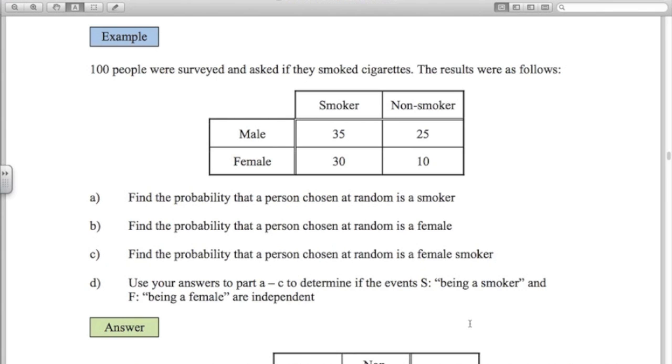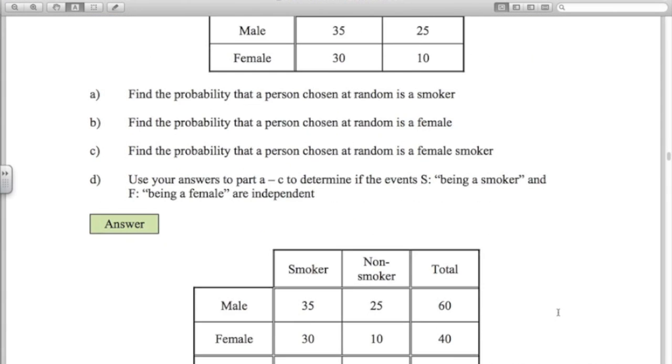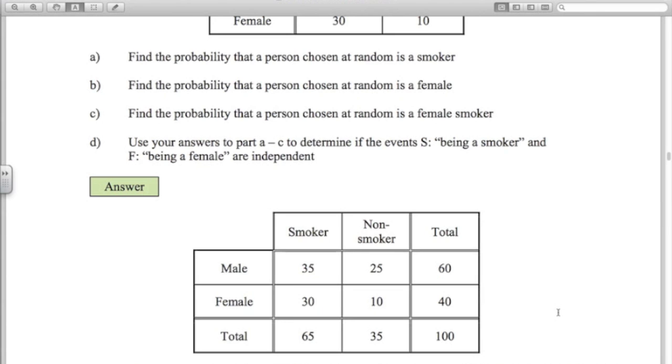Last example here, we've got a table where we've asked 100 people about their smoking habits. You may have seen these also last year. What's the probability the person chosen at random is a smoker? So if I just add on some extra columns here and get some totals. So we choose a person out at random. What's the probability they're a smoker? Well, 65 out of 100 were smokers. So 65 out of 100 or 0.65. The probability of the person chosen is a female. 40 out of the 100 people were females, so 0.4. The probability that a person chosen at random is a female smoker. 30 out of the 100. So 0.3.